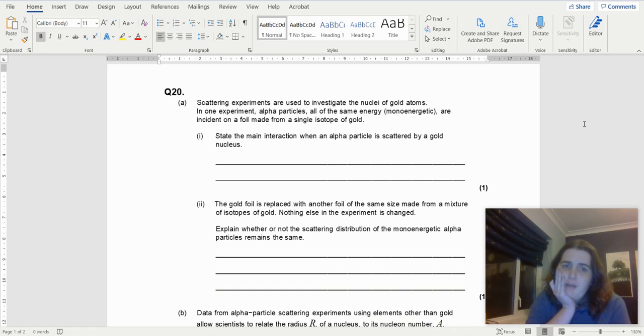So a scattering experiment is used to investigate the nuclei of gold atoms. In one experiment, alpha particles, all of the same energy, so monoenergetic, are incident on a foil made from a single isotope of gold.